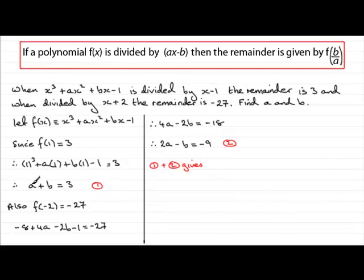Well we've got 2a and a so that's going to be 3a and minus b and b that's going to cancel to 0. And we've got minus 9 and 3 that's going to give minus 6. So if we divide both sides by 3 we end up with a equaling minus 2.